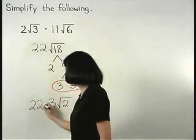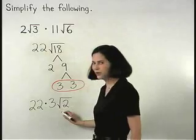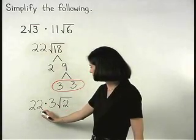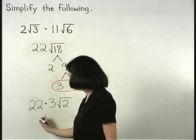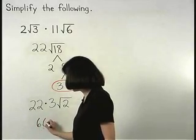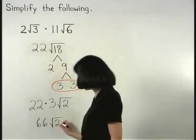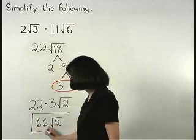We have 22 times 3 root 2. And multiplying the numbers that are outside the radical together, 22 times 3 is 66. So our final answer is 66 root 2.